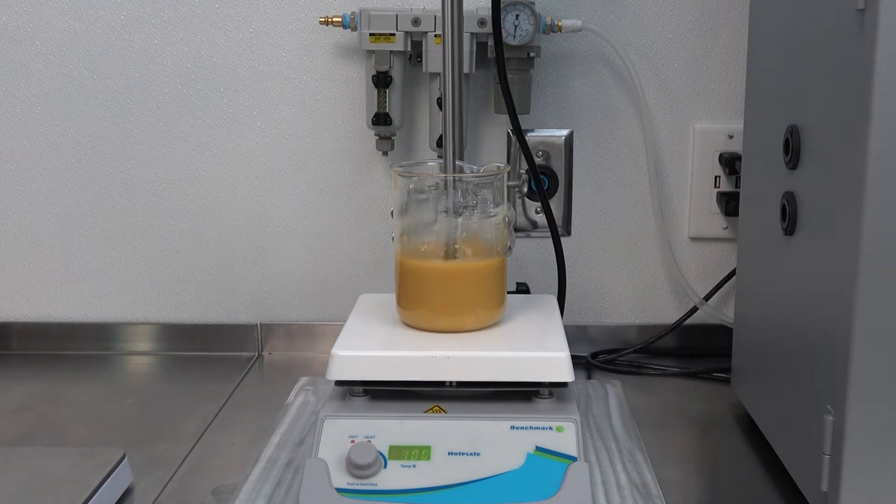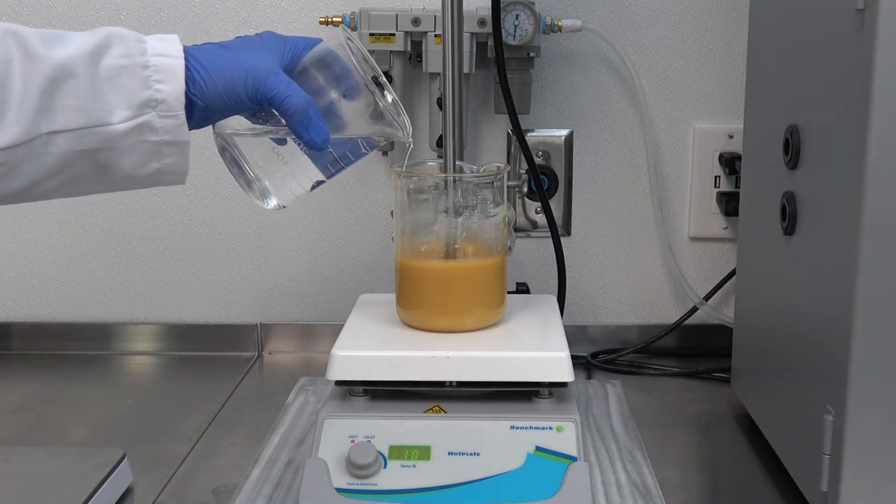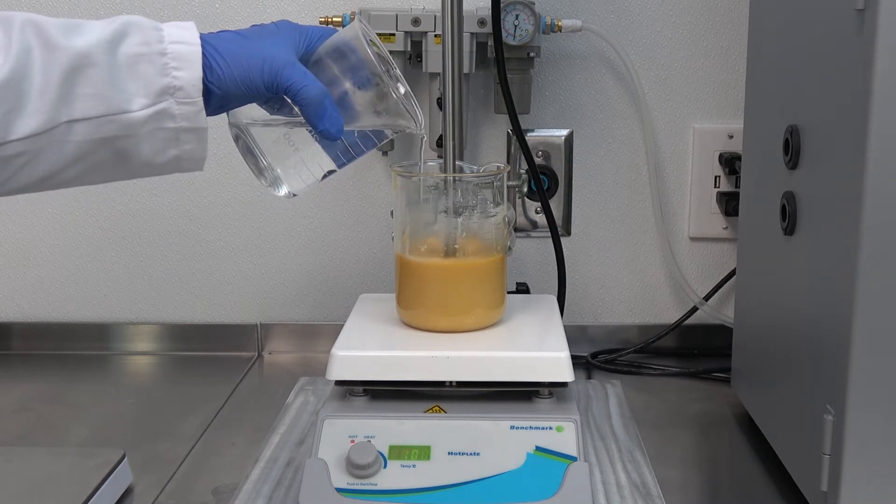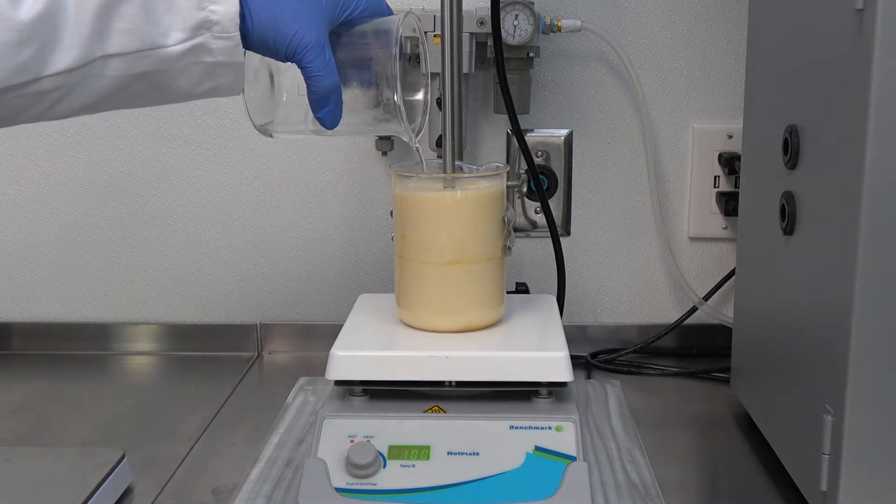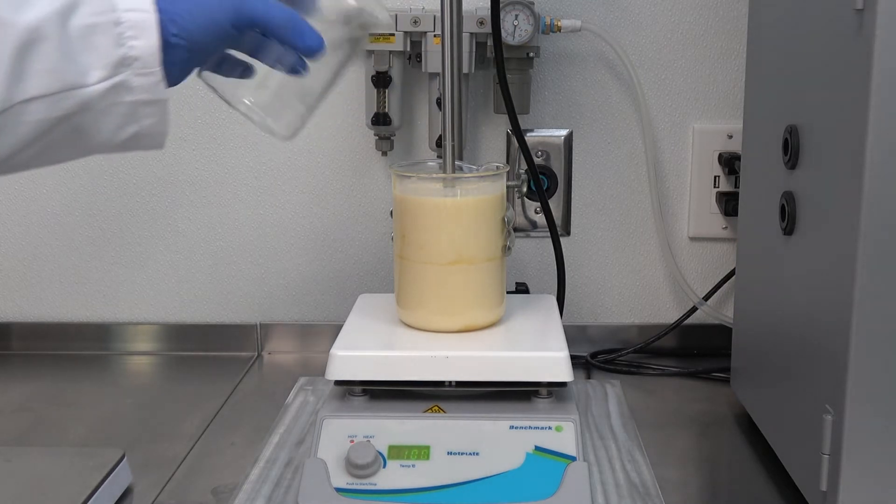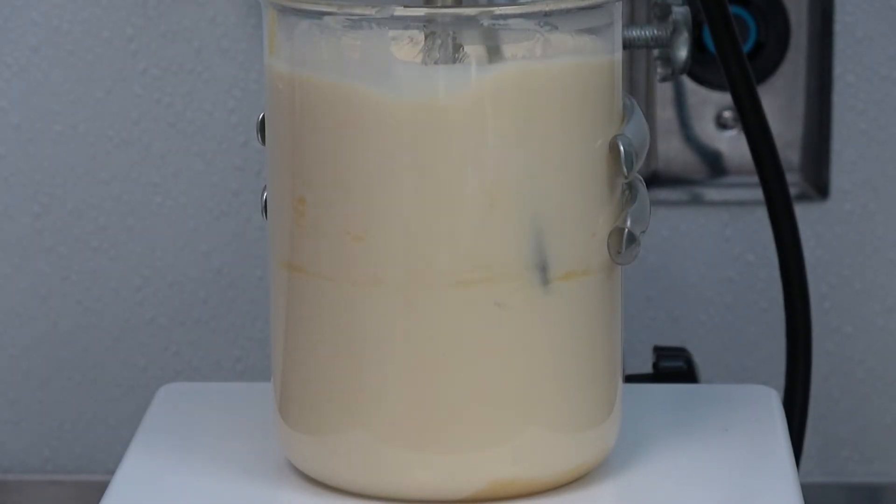When the material is thoroughly mixed, it's time to add the initial water. Add 250 ml of warm water, around 55 degrees Celsius, slowly while stirring vigorously. Use a scraper to remove any residual material from the walls of the beaker while continuing to mix.